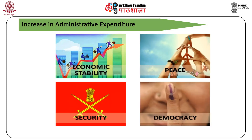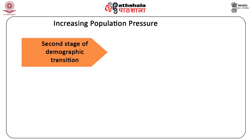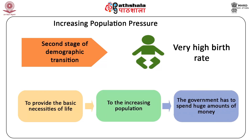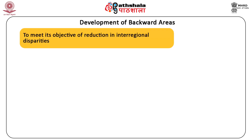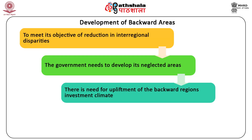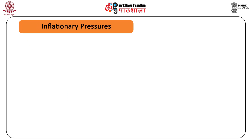Increase in administrative expenditure: to maintain economic stability, peace, security and democracy, the government needs to spend money. Increasing population pressure: most developing countries are in the second stage of demographic transition where birth rate is still very high. To provide the basic necessities of life to this increasing population, the governments have to spend huge amounts of money. Development of backward areas: to meet its objective of reduction in inter-regional disparities, the government needs to develop its neglected areas. There is a need for upliftment of the backward regions, investment climate, building of social overheads and enhancing the productive capacity of the people.